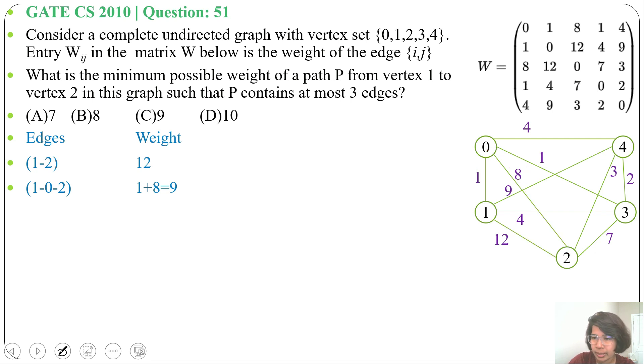At most 3 edges possible, so let me try with 3 edges. From 1 will go 0, then from 0 will go 4, then from 4 will come to 2. So 1 plus 4 plus 3, it will be 8.